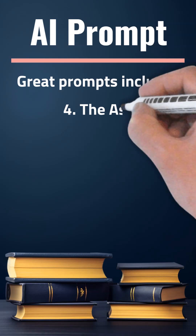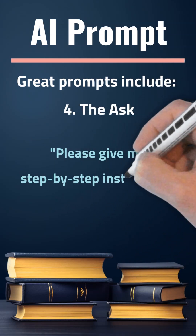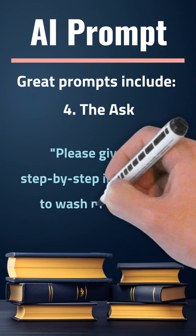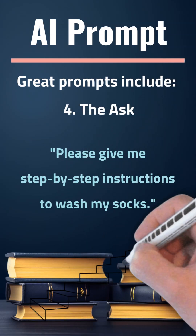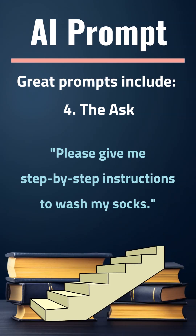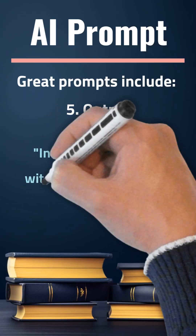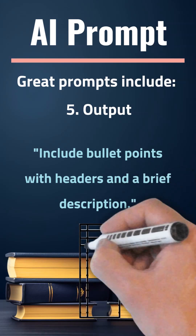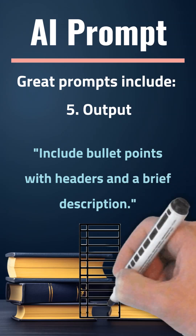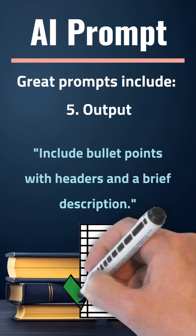Number four is what most people skip to — it's when you ask for the task, like this: 'Please give me step-by-step instructions to wash my socks.' And lastly, the output — what do you want the AI response to be like? For example: 'Include bullet points with headers and a brief description.'